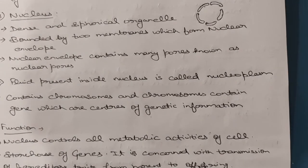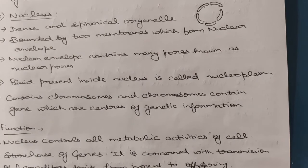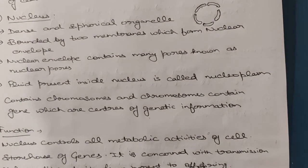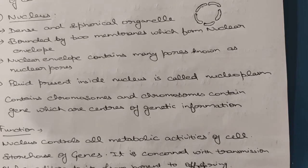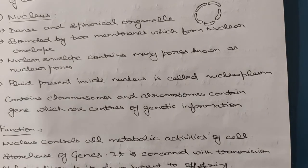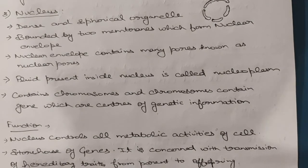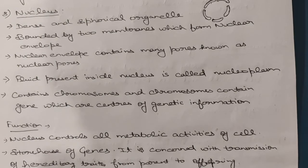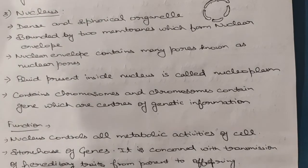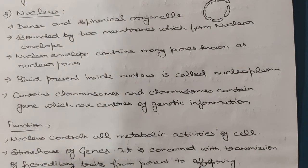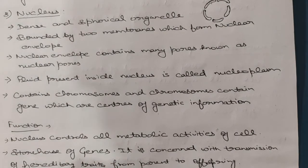Third, the nucleus is concerned with the transmission of hereditary traits from parent to offspring — this is a continuous process of transferring characteristics across generations. Fourth, the nucleus controls the cell cycle: the cell performs metabolic activity, then gets ready for division, then divides to give rise to two new cells, and the new cells repeat the same cycle.